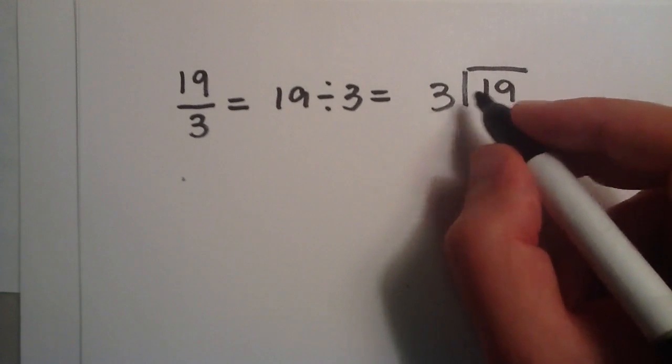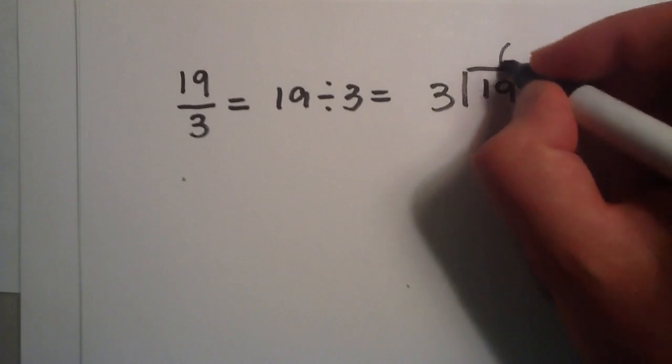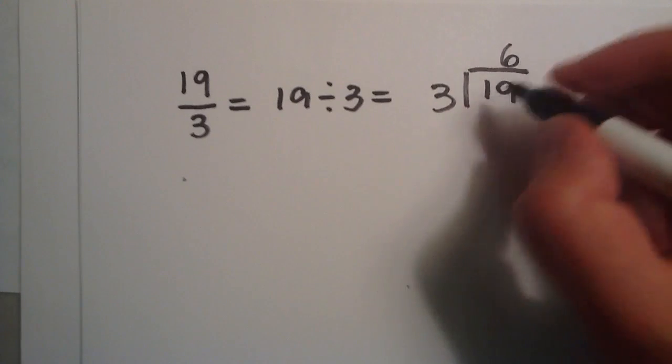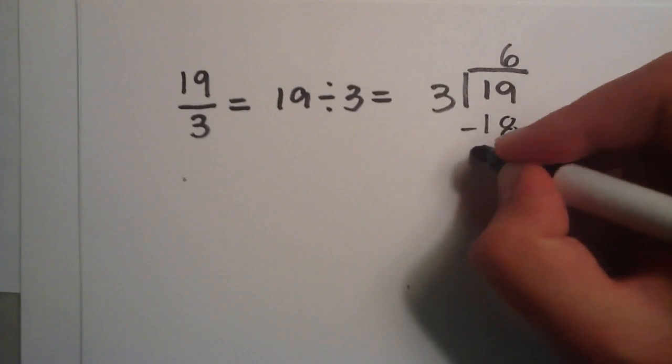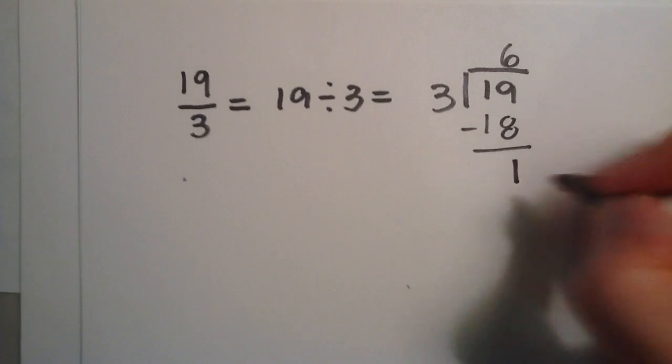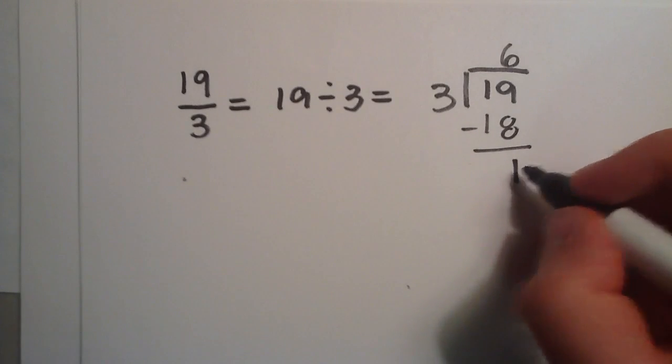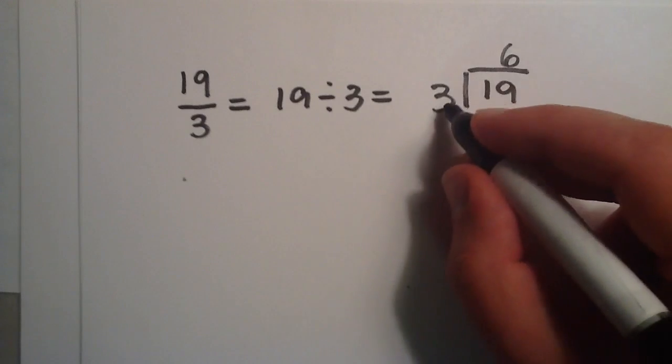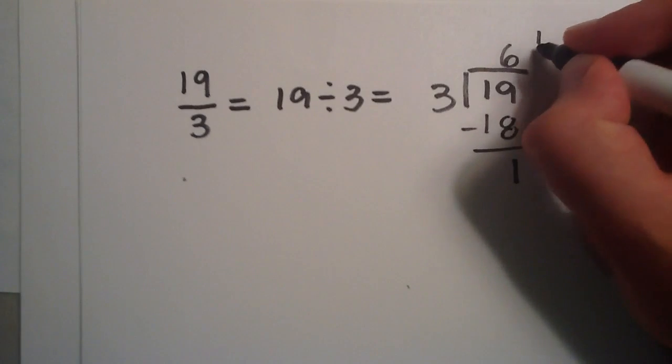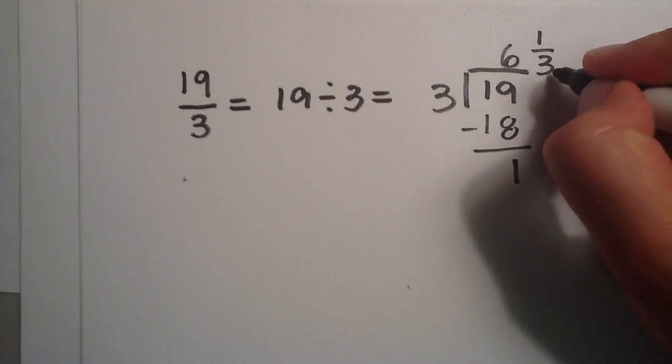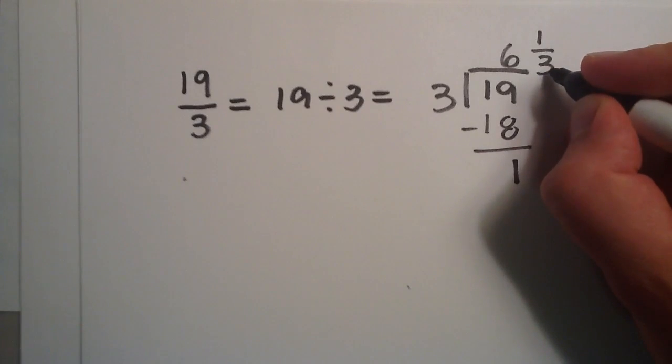3 doesn't go into 1, but 3 goes into 19 six times. 3 times 6 is 18. We subtract the 18 from the 19. We get our remainder 1. Now 1 is the piece that we have extra, and it's 1 piece out of 3. So we write that as 1 third. 1 piece out of 3. It takes 3 to make up a whole unit.